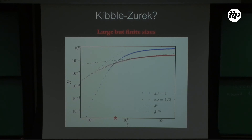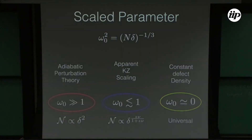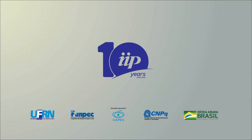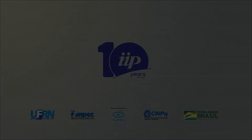This is in agreement with analytical results on the harmonic oscillator by a mathematician, which we were very happy about. Kibble-Zurek appears only as a crossover, but the real result is that it becomes a quench. These are my amazing collaborators. Thank you very much.